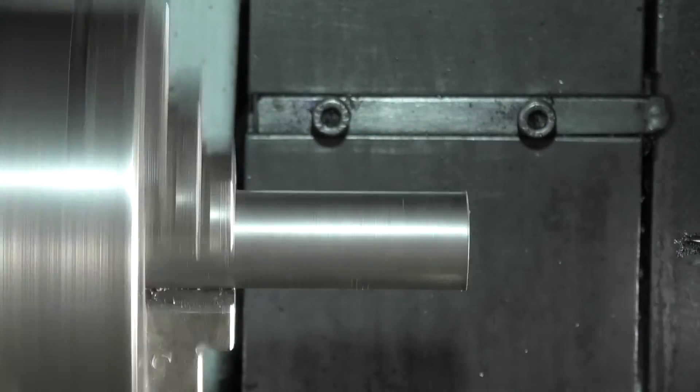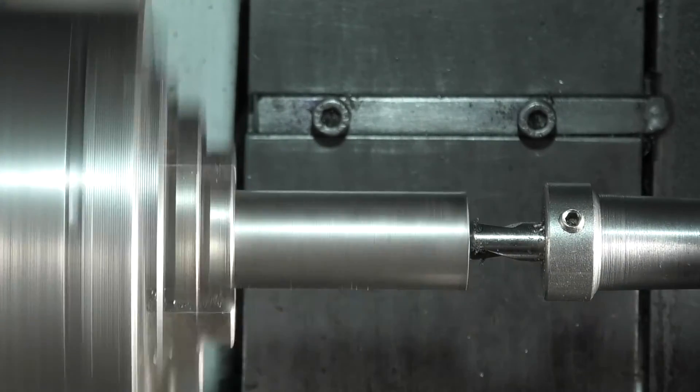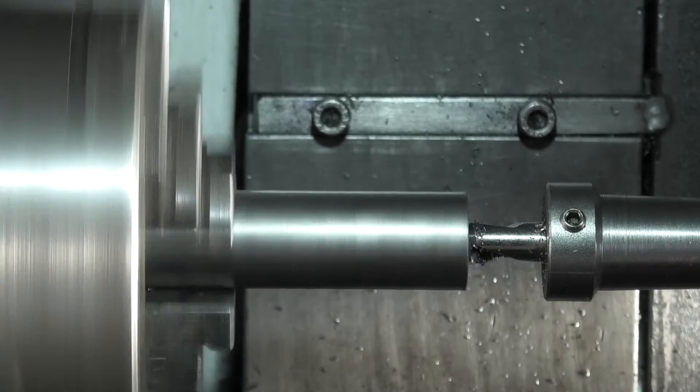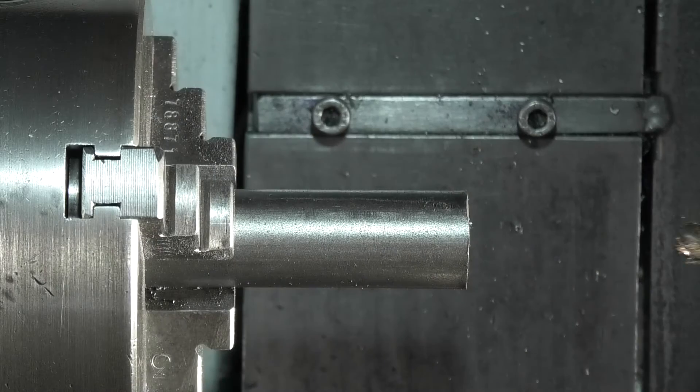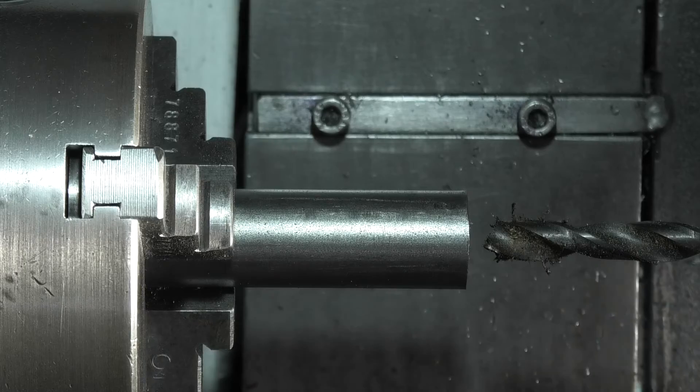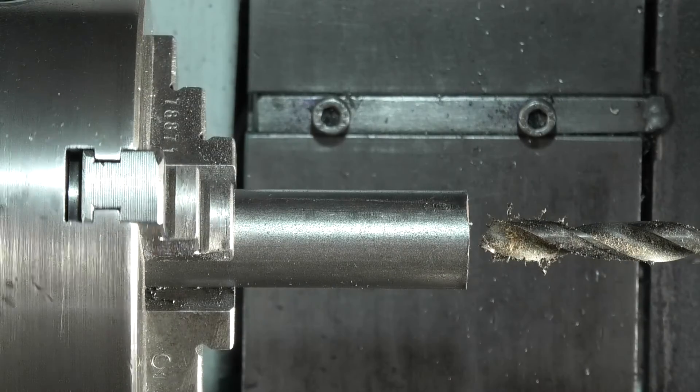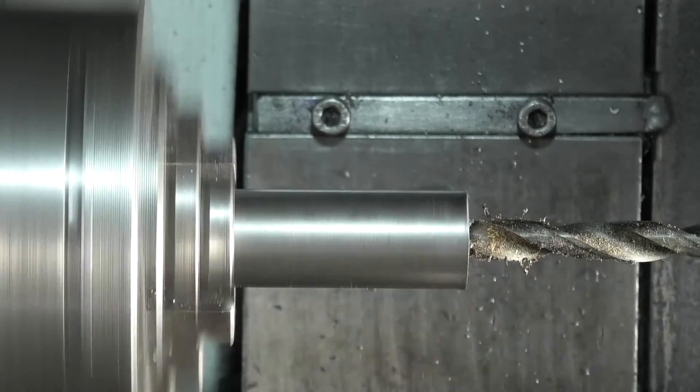We start by preparing a piece of steel ready to be reamed. First of all, we drill and bore a hole. Now I want to drill it out. This is, I think, 21/64, as long as it's smaller than the reamer.